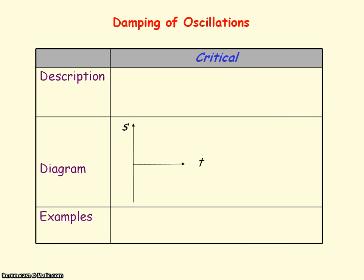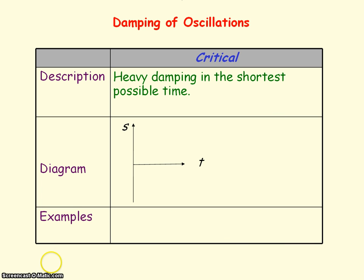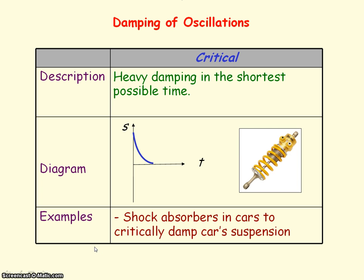Finally, critical damping is heavy damping in the shortest possible time. That is, you have a resistive force that brings the displaced system back to equilibrium in the shortest possible time without oscillating. An example would be shock absorbers in cars that critically damp the car suspension to stop the suspension from producing a bouncy ride.